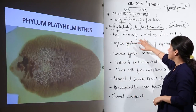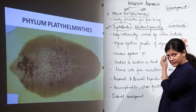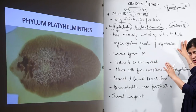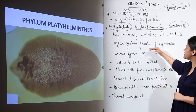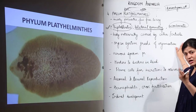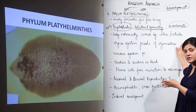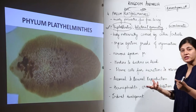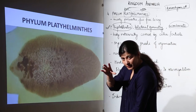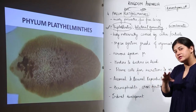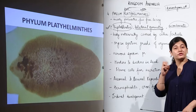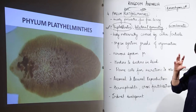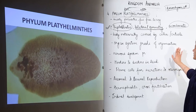The body is externally covered by cilia or cuticle. These organisms have a cuticularized body, with a cuticle layer on the outside. There is an organ system grade of organization — not as advanced as in the next phyla, but organs are present. Instead of simple arrangements with unnamed parts, we now find actual organs like hooks and suckers in the head region.